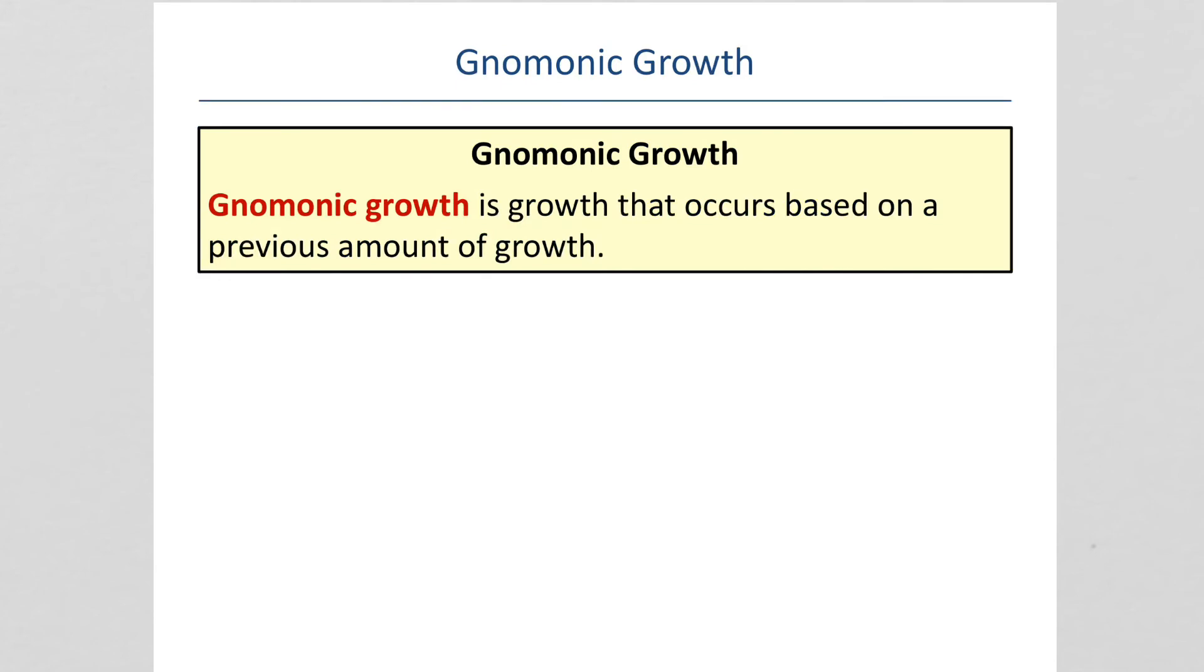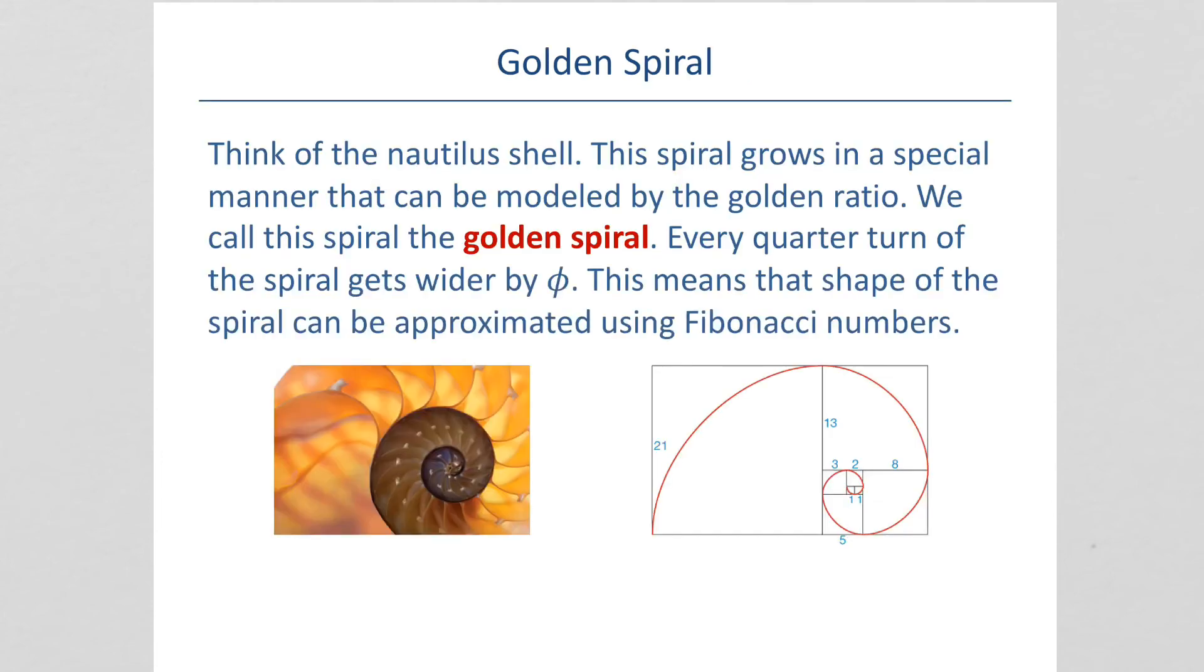Pneumonic growth is growth that occurs based on a previous amount of growth. Fibonacci sequence is like that. It grows on the previous amount. And here is the golden spiral. Again, based on the Fibonacci sequence and the golden ratio.